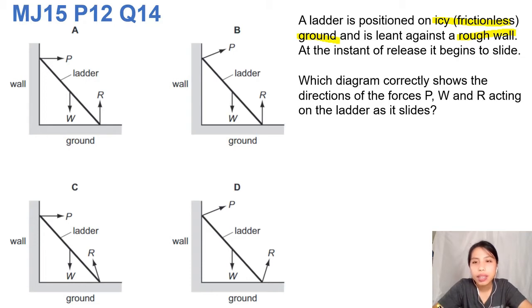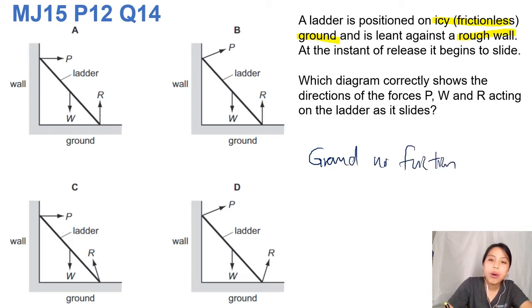So let's see, which one does not have friction? The ground does not have friction. So ground has no friction, means only has a normal reaction force. So normal reaction force.